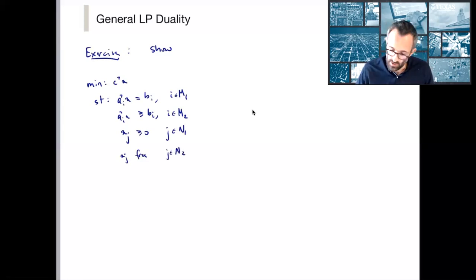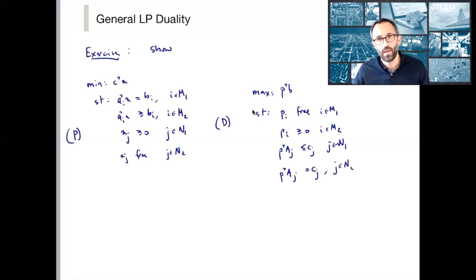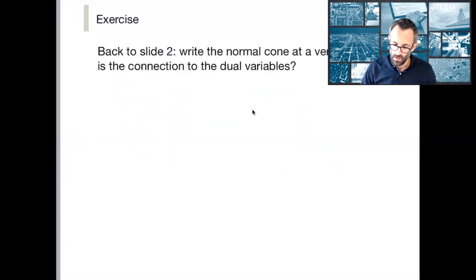So use this max-min approach that we just did to show that if this is the primal, then the dual is maximize p^T b subject to p_i free for i in index set M1, p_i ≥ 0 for i in index set M2, p^T a_j ≤ c_j for j in index set N1, and p^T a_j = c_j for j in index set N2. And I've written it in this way just to make even more clear the fact that this should be second nature to us, that constraints in the primal correspond to variables in the dual, constraints in the dual correspond to variables in the primal.